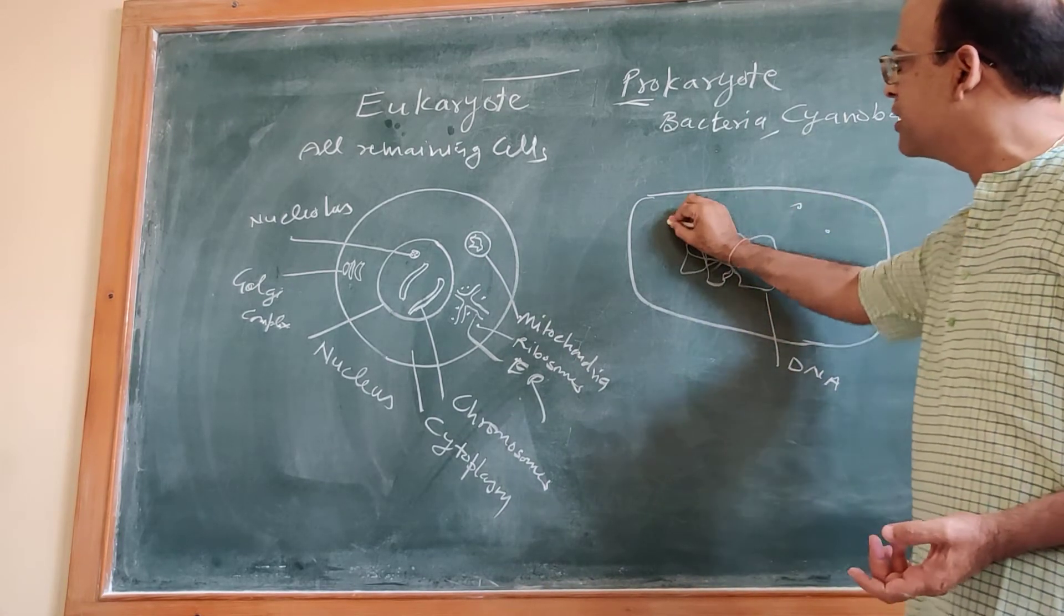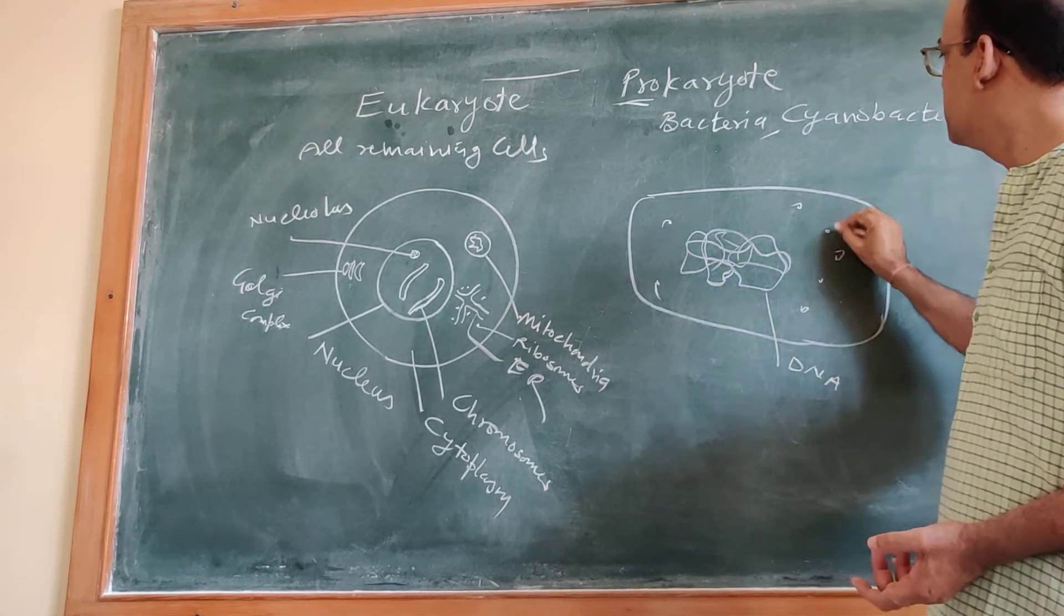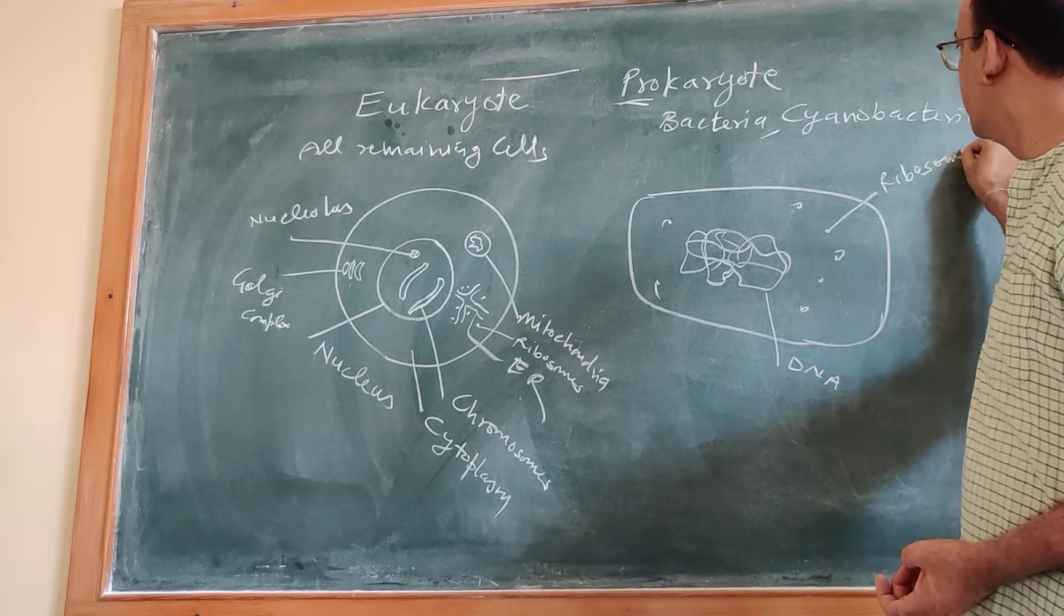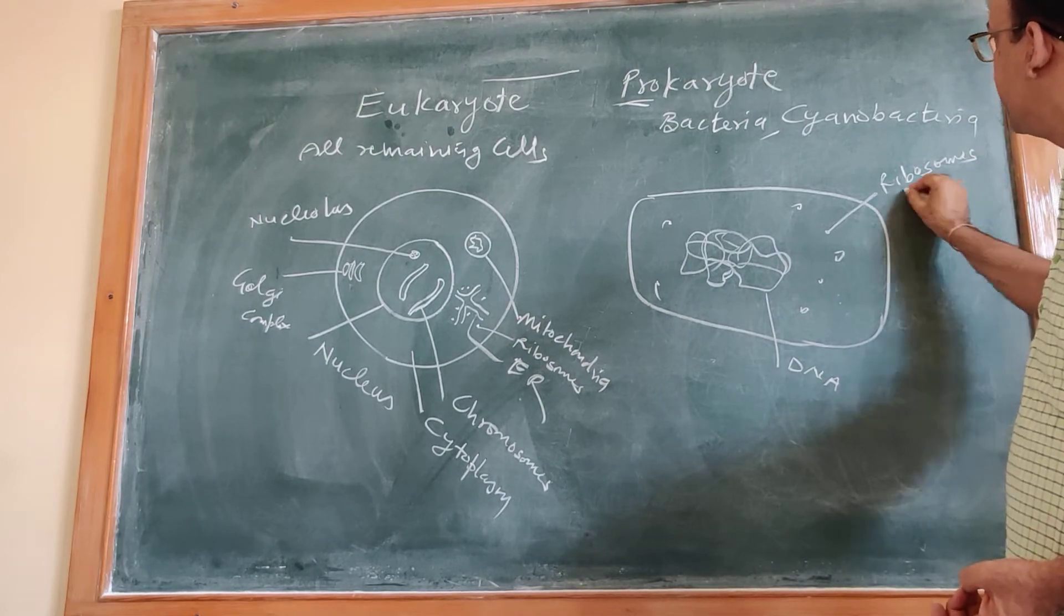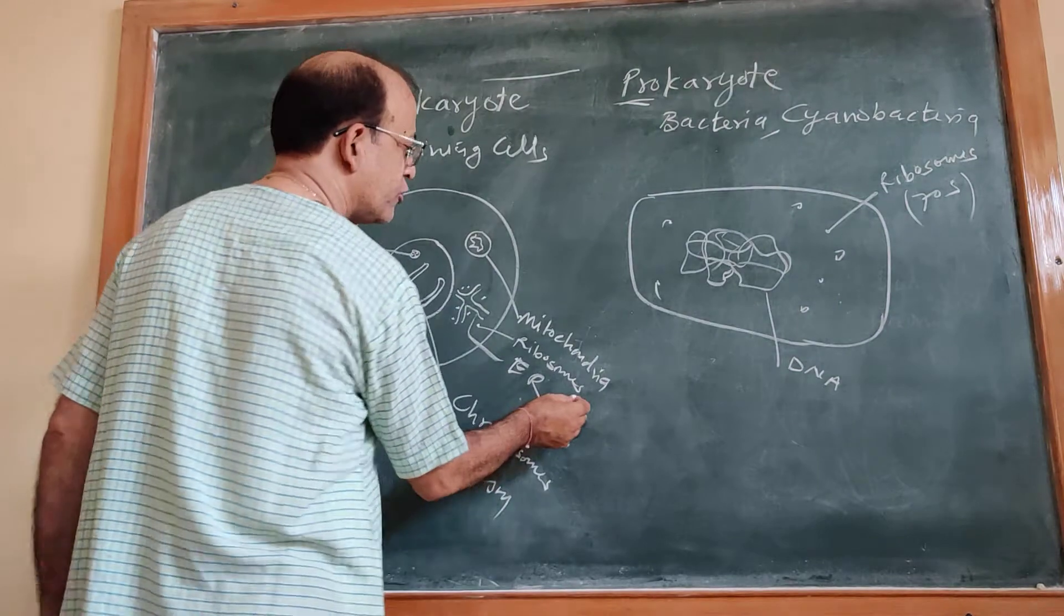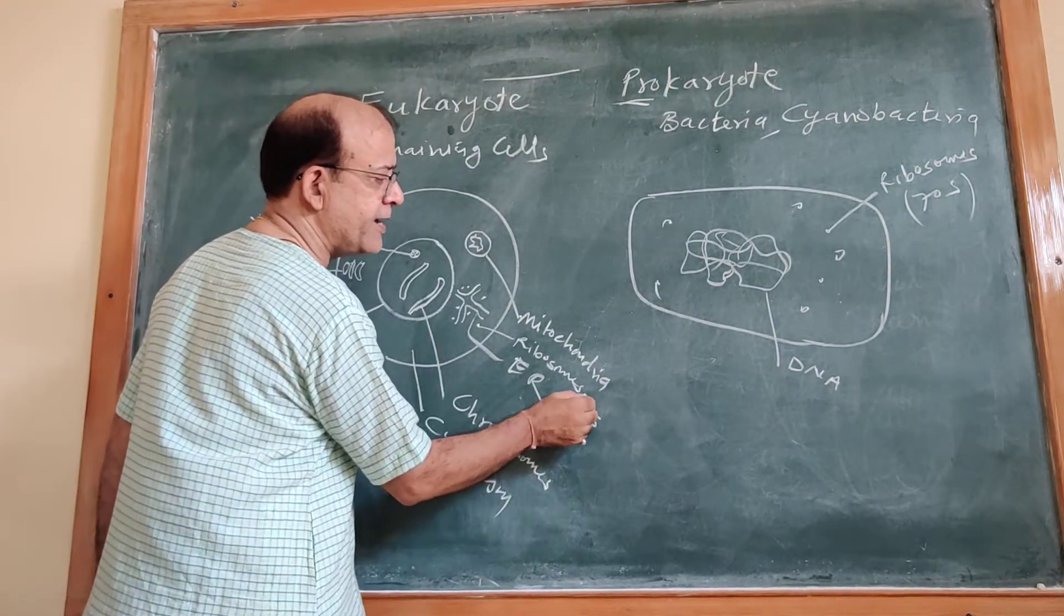And here, these particles are there in the cytoplasm. These particles are ribosomes. These ribosomes are of 70S type. Whereas here, in eukaryote, ribosomes are of 80S type.